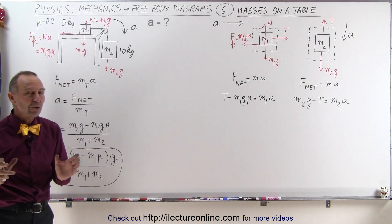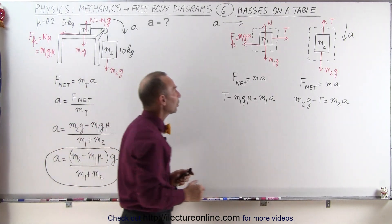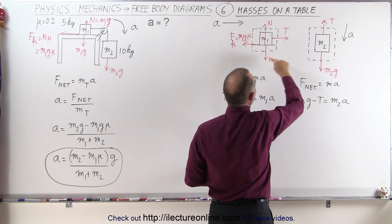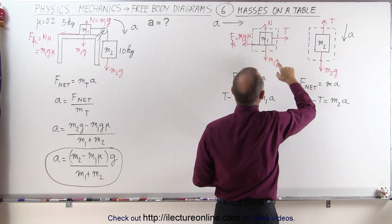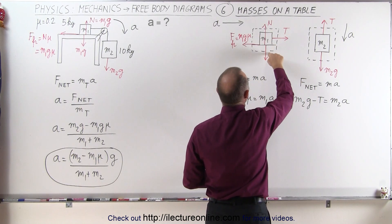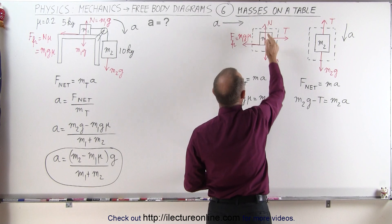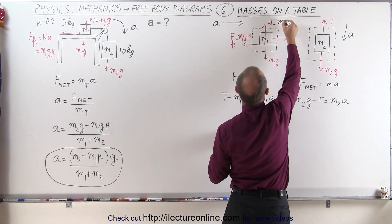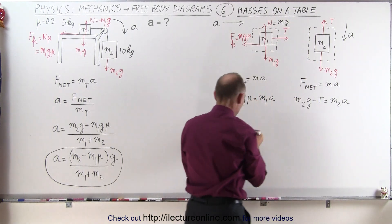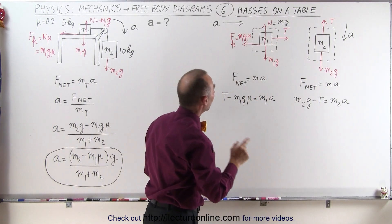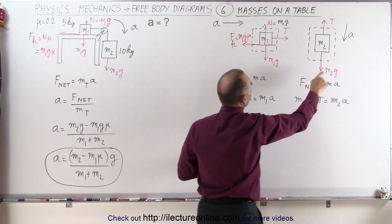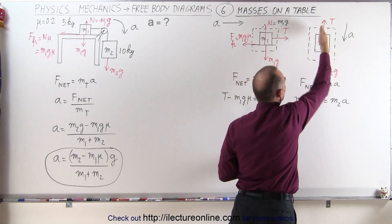We can now do the same thing using free body diagrams, looking at each mass separately and all the forces acting on each mass. Notice that the weight m1g is cancelled out by the normal force in the opposite direction — same force, opposite direction. So the only forces acting in the same or opposite direction of the acceleration are these two forces. And in the case of m2, it will be those two forces.